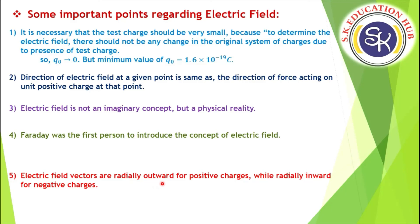Electric field vectors are outward for positive charges while inward for negative charges. The opposite side for positive charge is outward, and for negative charge it is inward.